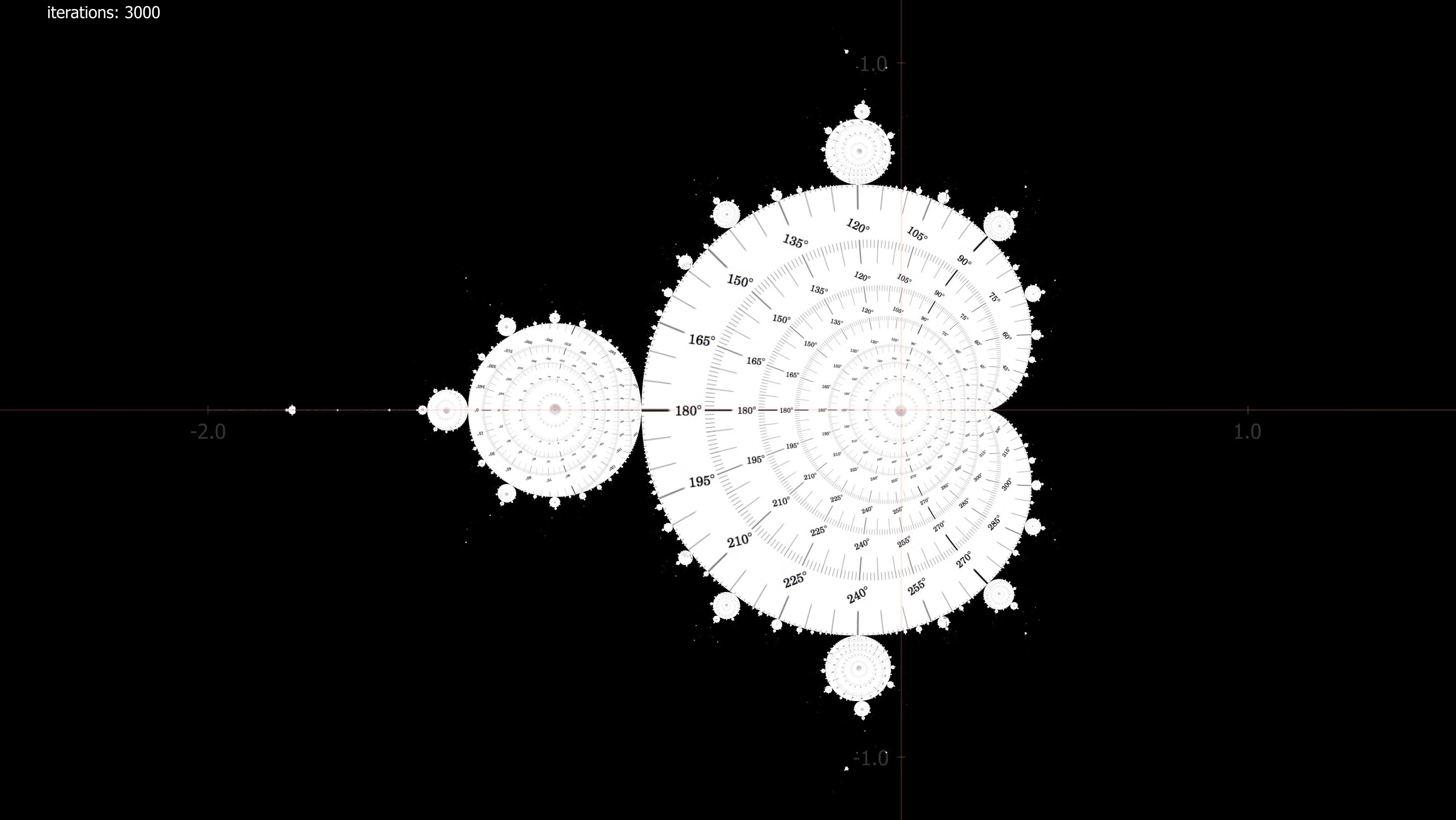These angles also correspond to the location of each bulb. For example, the period 3 bulb is at 120 degrees and 240 degrees, exactly one third of the way around the polar grid. Within this animation you can also see the periodic motion within the other bulbs.